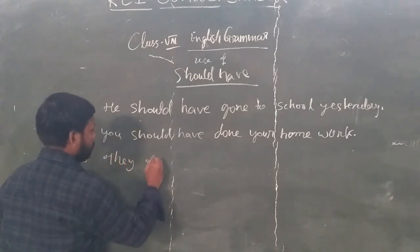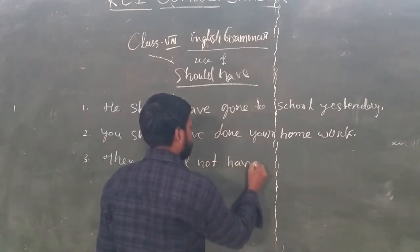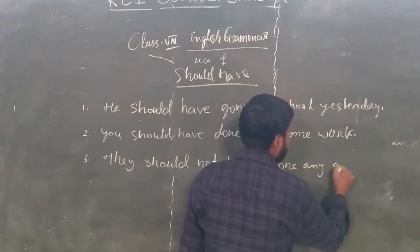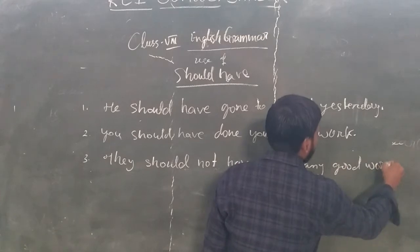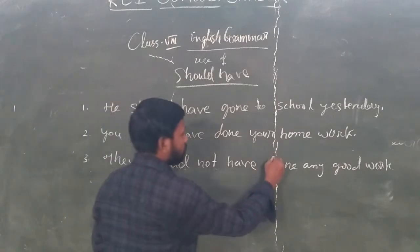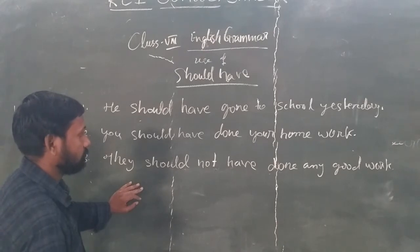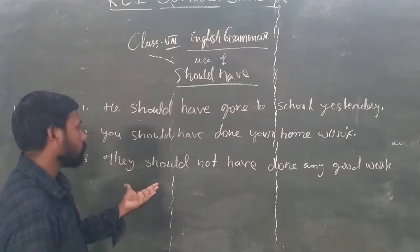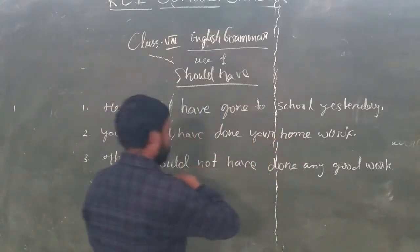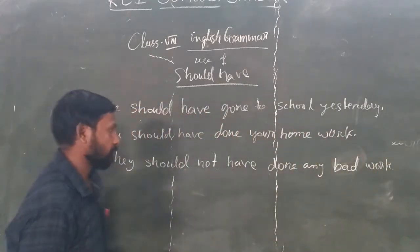For the negative form: 'They should not have done any bad work.' This also gives advice — meaning they should not have done that bad work. You can change 'good work' to 'bad work' in such sentences. This is how we construct negative sentences with 'should not have'.